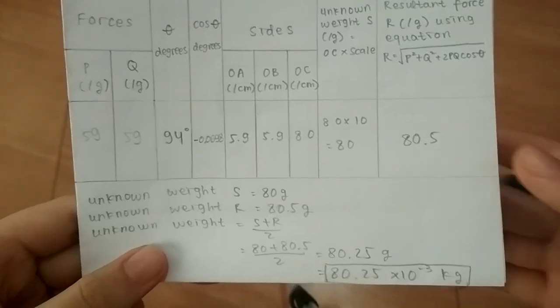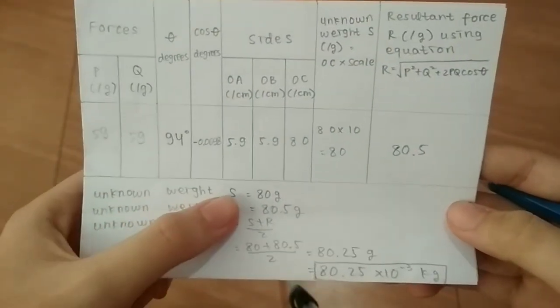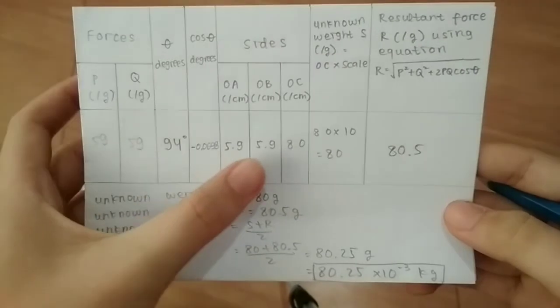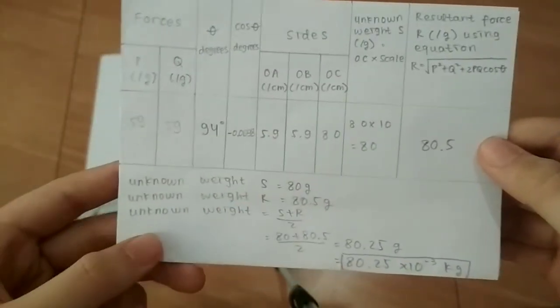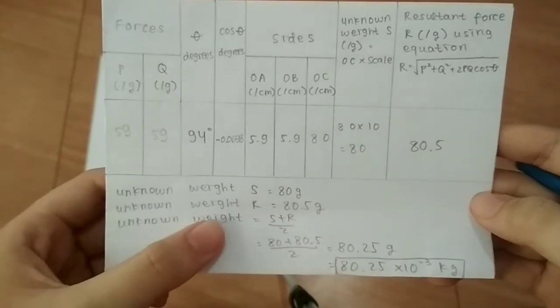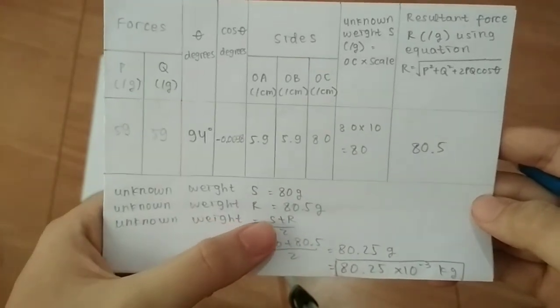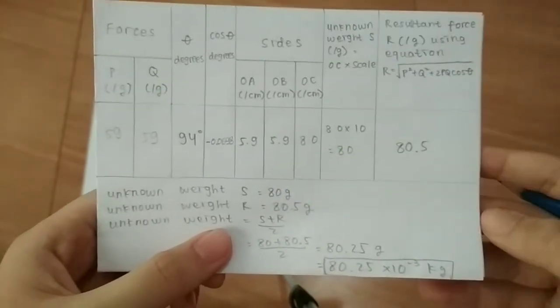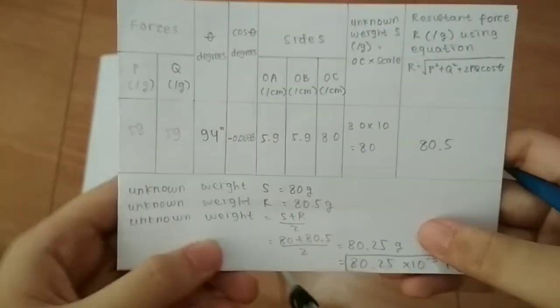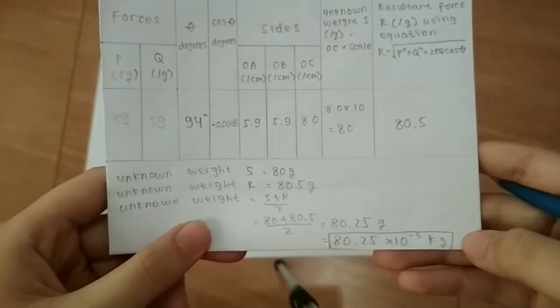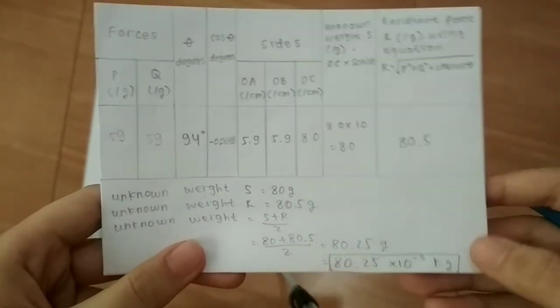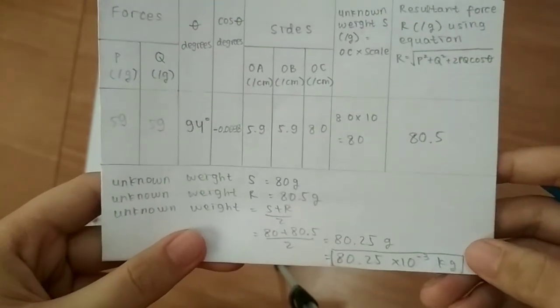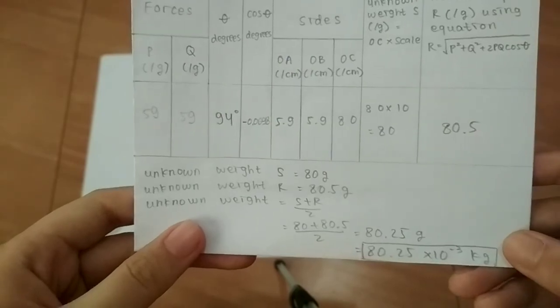For our calculations, we know that unknown weight S is 80 grams from this, and unknown weight R is 80.5 grams. And so for the unknown weight, we have S plus R divided by 2 to find the average. And we have 80.25 grams or equal to 80.25 times 10 to the negative third kilograms in SI units. So this is our weight of our unknown mass.